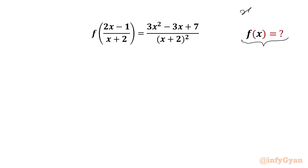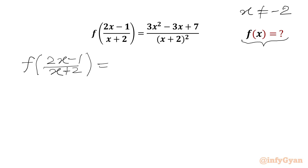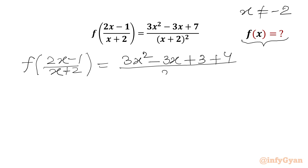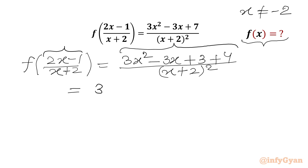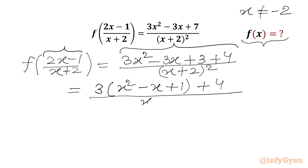Let us get started by writing x cannot be equal to negative 2. Now we will write our functional equation f of (2x minus 1) over (x plus 2). This will be equal to 3x squared minus 3x, then 7 we can write as 3 plus 4, and the denominator is (x plus 2) whole squared. I am trying to write the RHS in terms of (2x minus 1) if possible. I will take 3 common out from the first three terms, so I can write x squared minus x plus 1, and then we have plus 4, with denominator (x plus 2) whole squared.